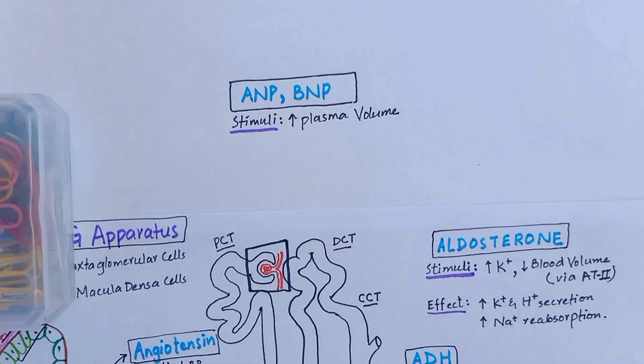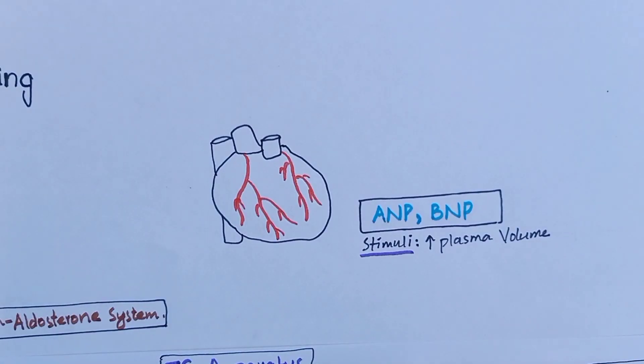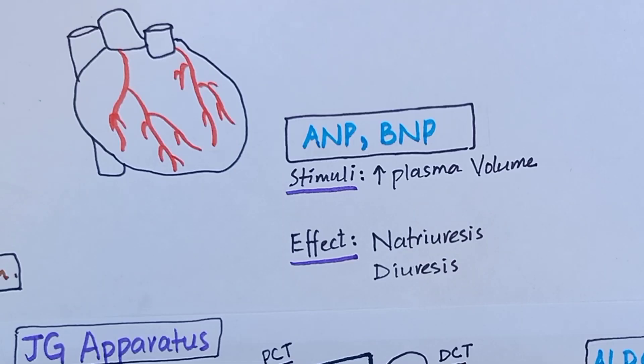There are specific cells in cardiac atria that secrete atrial natriuretic peptides, and there are specific cells in cardiac ventricles that secrete brain natriuretic peptide when they are stretched because of plasma volume expansion.